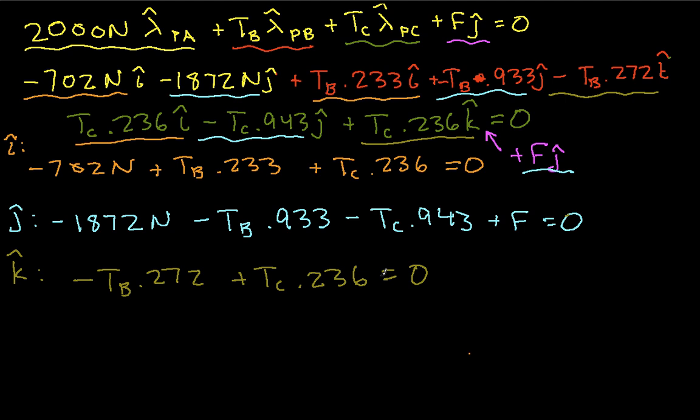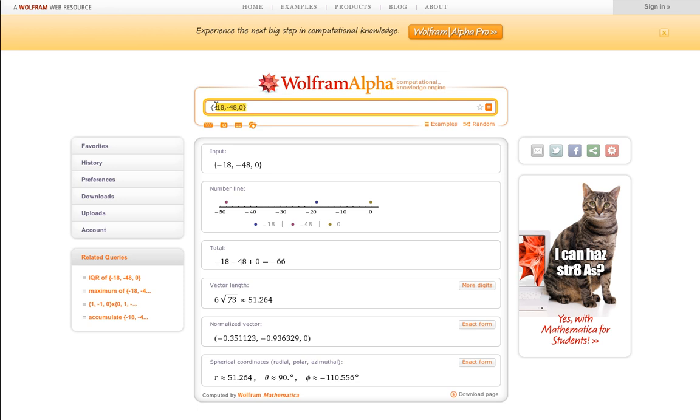So we have three equations in three unknowns. The obvious thing to do is type these into Wolfram Alpha and see what we get. So first we have the first equation: minus 702 plus 0.233, and I'm going to call TB just B, plus 0.236, and I'll call TC just C. This is equal to 0.